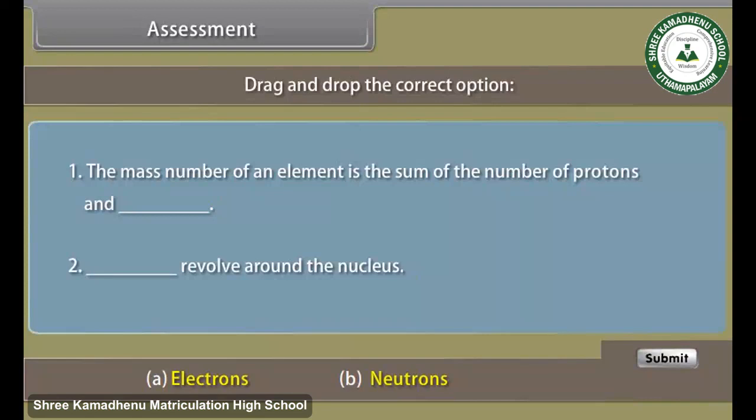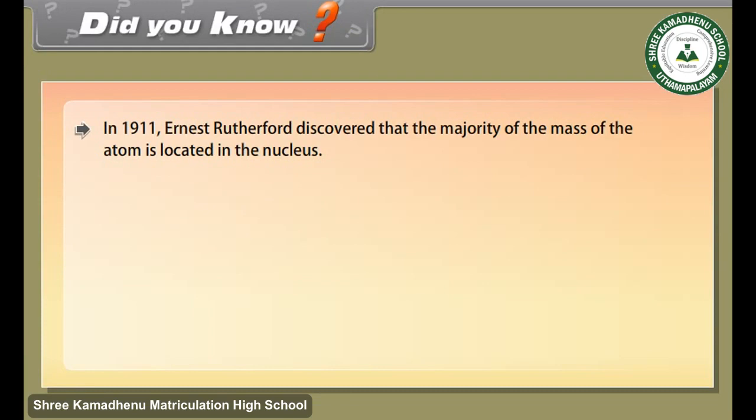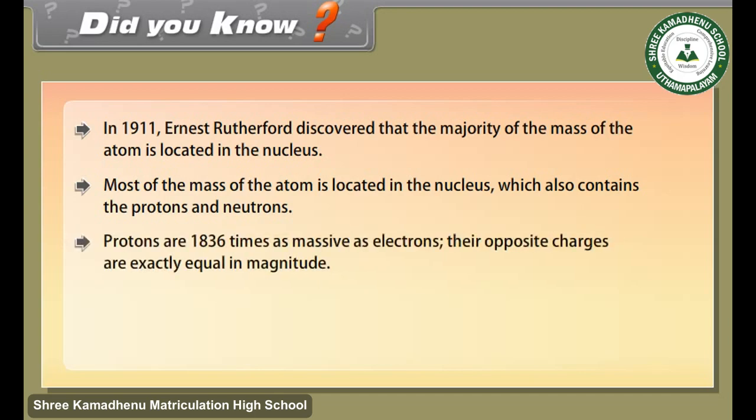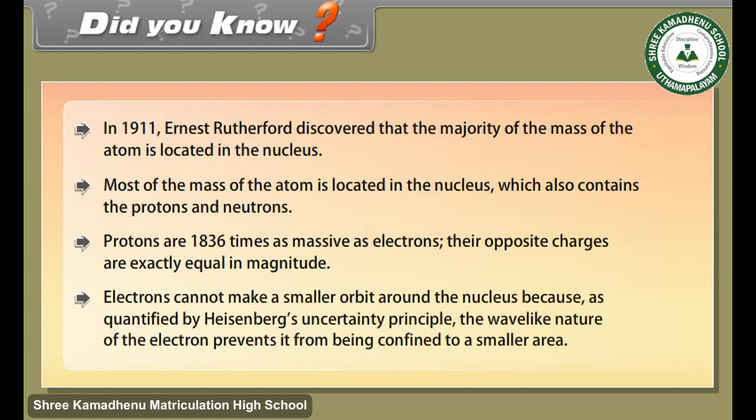Assessment. Before proceeding further, let us know how much have you learned. Drag and drop the correct option. Did you know, in 1911, Ernest Rutherford discovered that the majority of the mass of the atom is located in the nucleus. Most of the mass of the atom is located in the nucleus, which also contains the protons and neutrons. Protons are 1836 times as massive as electrons. Their opposite charges are exactly equal in magnitude. Electrons cannot make a smaller orbit around the nucleus, because as quantified by Heisenberg's uncertainty principle, the wave-like nature of the electron prevents it from being confined to a smaller area.